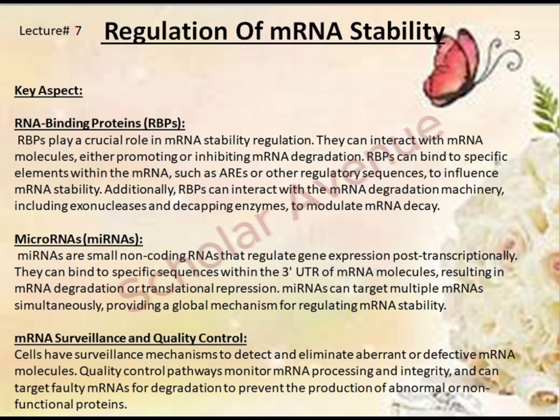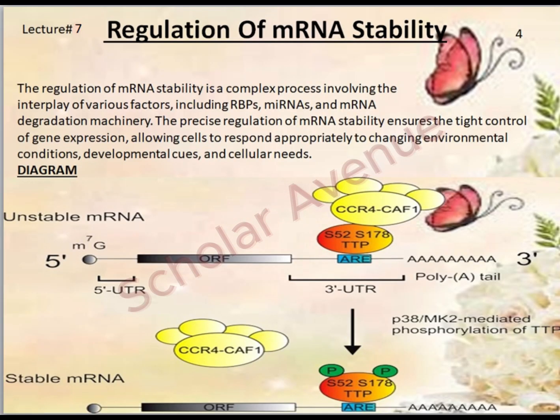The last mechanism is mRNA surveillance and quality control. Cells have surveillance mechanisms to detect and eliminate aberrant or defective mRNA molecules. Quality control pathways monitor mRNA processing and integrity, and can target faulty mRNAs for degradation to prevent the production of abnormal or non-functional proteins. The regulation of mRNA stability is a complex process involving the interplay of RBPs, miRNAs, and mRNA degradation machinery, ensuring tight control of gene expression and allowing cells to respond to changing environmental conditions, developmental cues, and cellular needs.